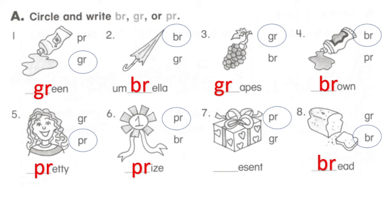Number 5, circle with pr. Number 6, circle with pr, prize. And number 7, circle with pr. Yes! And number 8, circle with br. Your answer is right. Ok, let's go next.